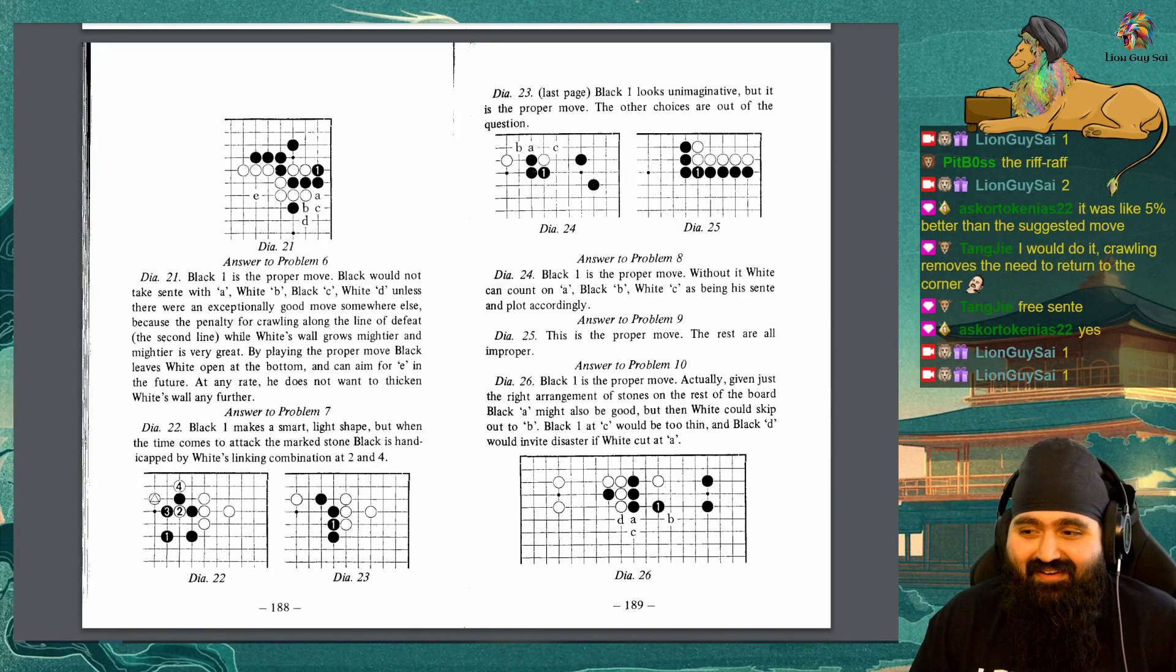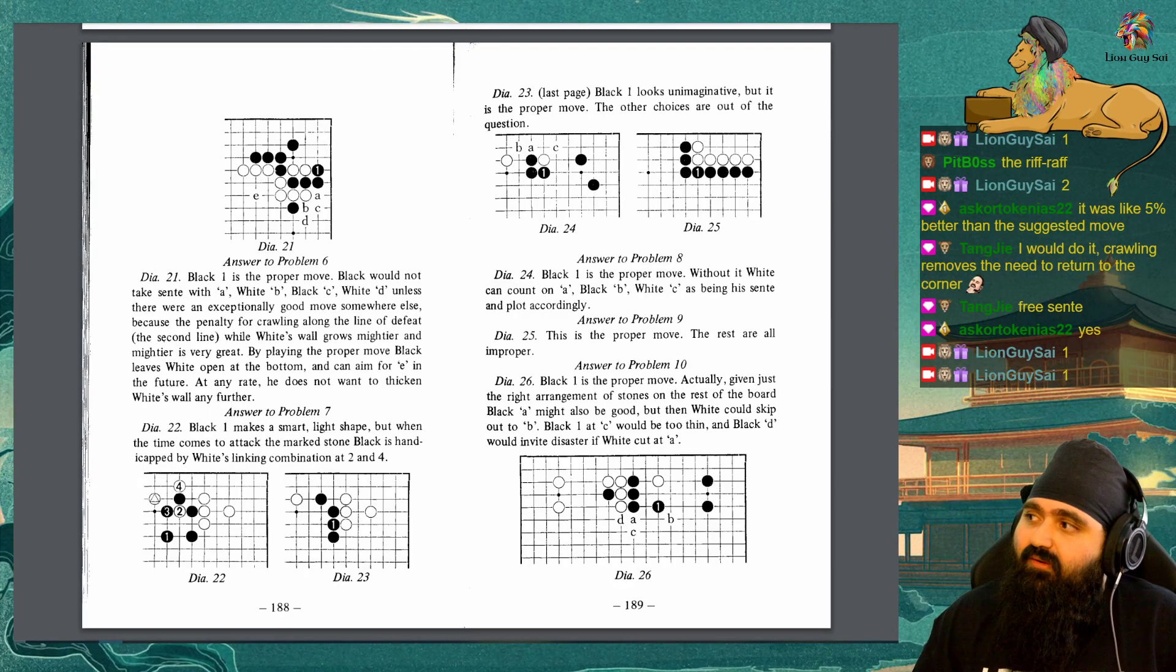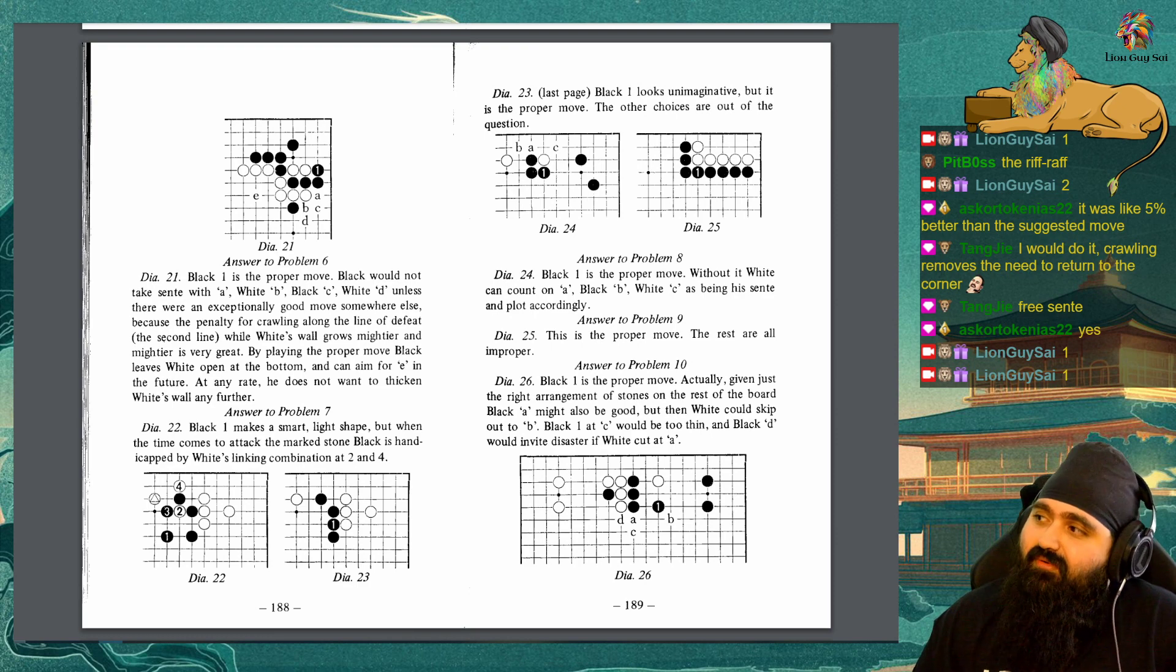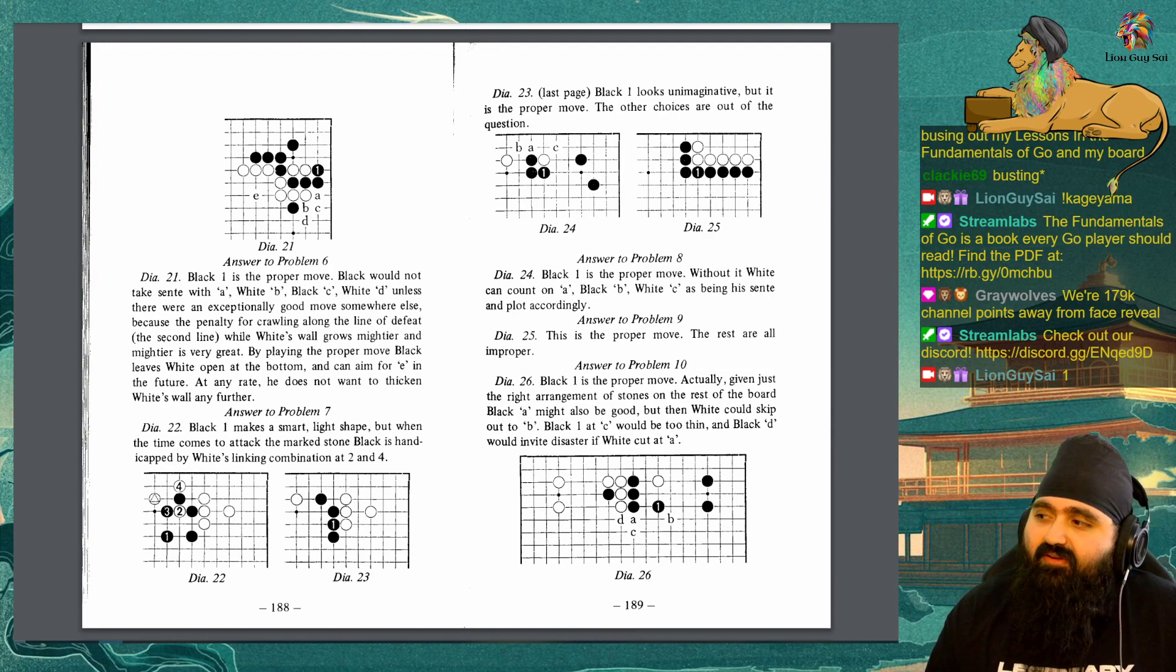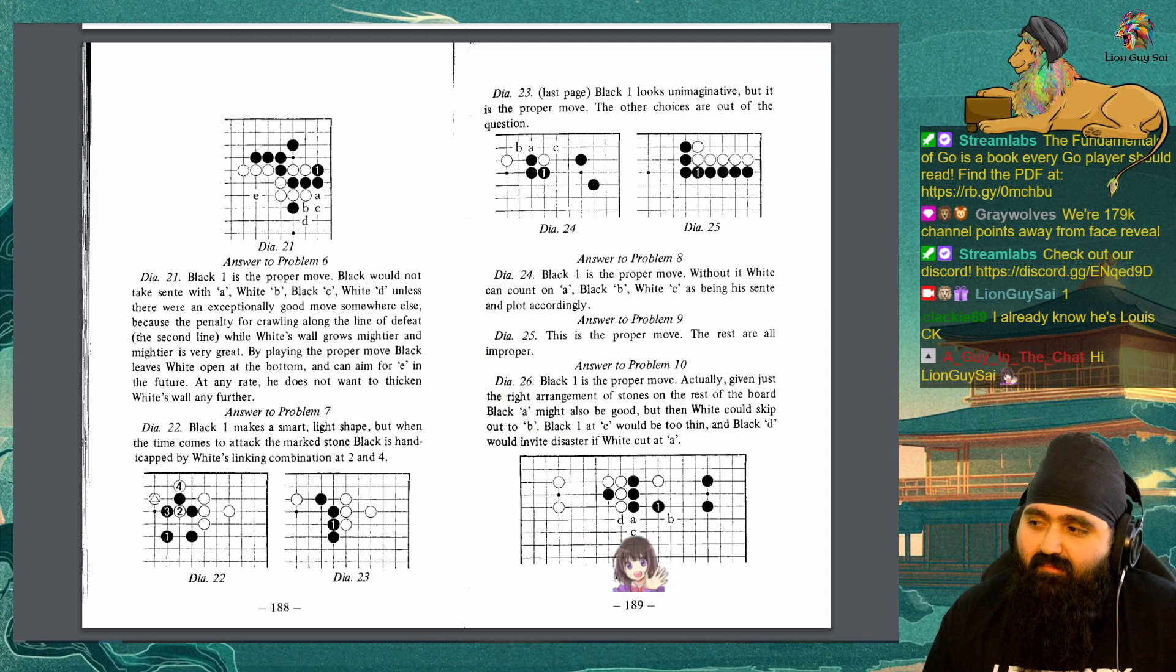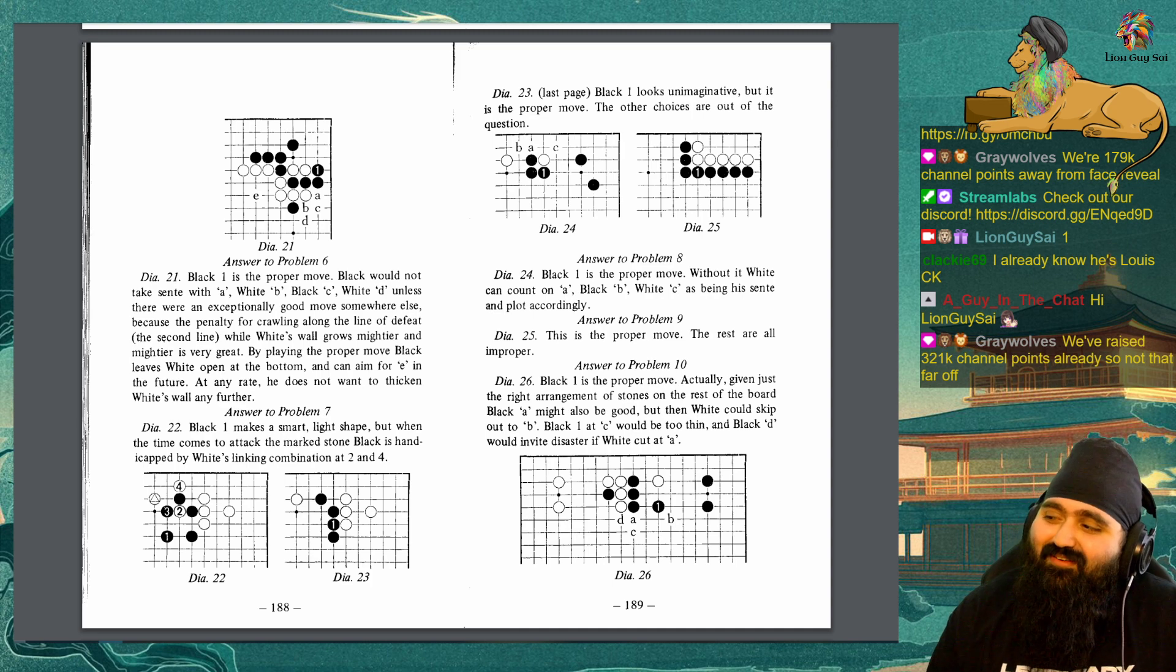Answer to problem 7. Diagram 22. Black 1 makes a smart light shape, but when the time comes to attack, the marked stone Black is handicapped by White's linking combination at 2 and 4. Diagram 23. Black 1 looks unimaginative, but it is the proper move. The other choices are out of the question. Answer to problem 8. Diagram 24. Black 1 is the proper move. Without it, White can count on A, Black B, White C, as being his sente, and plot accordingly. Answer to problem 9. Diagram 25. This is the proper move. The rest are all improper.